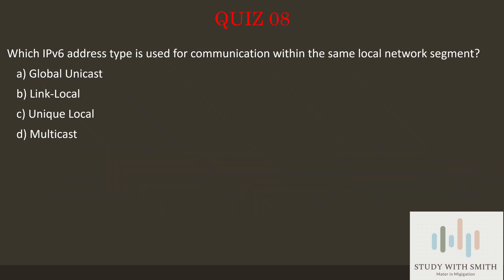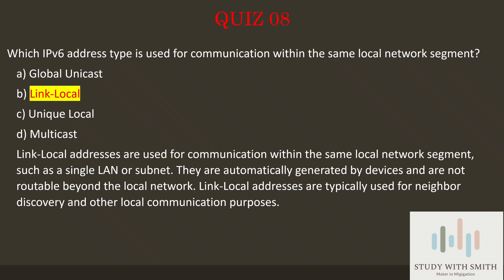Question 8: Which IPv6 address type is used for communication within the same local network segment? The answer is B: Link-local. Link-local addresses are used for communication within the same local network segment, such as a single LAN or subnet. They are automatically generated by devices and are not routable beyond the local network. Link-local addresses are typically used for neighbor discovery and other local communication purposes.